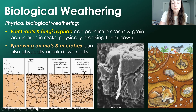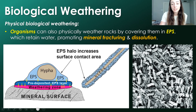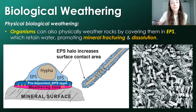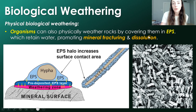Another type of physical biological weathering involves burrowing organisms — burrowing animals and burrowing microbes — which physically break down rocks. There are also microorganisms that physically weather rocks by covering them in what's called EPS, or extracellular polymeric substances — a mucousy substance microbes can excrete to create micro-environments for their colony. This EPS retains water, promoting mineral fracturing and dissolution. So it starts as physical weathering but, once it promotes dissolution, it becomes chemical biological weathering.